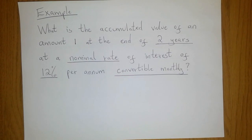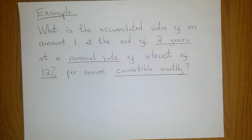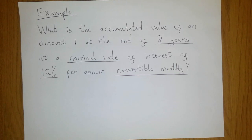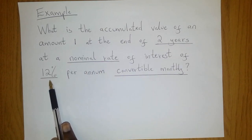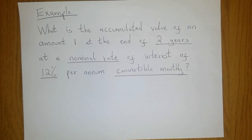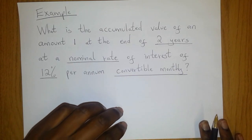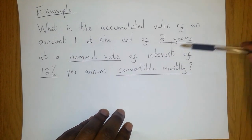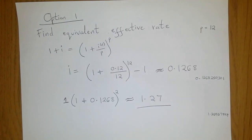Let me give you an example. What is the accumulated value of an investment of 1 at the end of two years at a nominal rate of interest of 12% per annum convertible monthly? Our nominal rate of interest is 12% per annum convertible monthly, which means that every month the interest paid is 1%, and we are going to look at this over a period of two years.